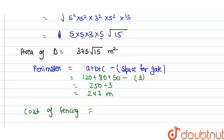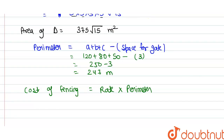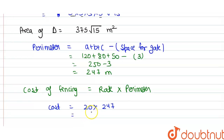The cost of fencing equals the rate multiplied by the perimeter. The rate given is rupees 20 per meter, and the perimeter is 247 meters. So cost equals 20 × 247 = rupees 4940. Therefore, the total cost of fencing is rupees 4940.